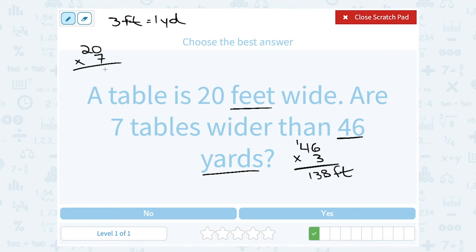Well 7 times 0 is 0. 7 times 2 is 14. So we get 140 feet total for all 7 tables.